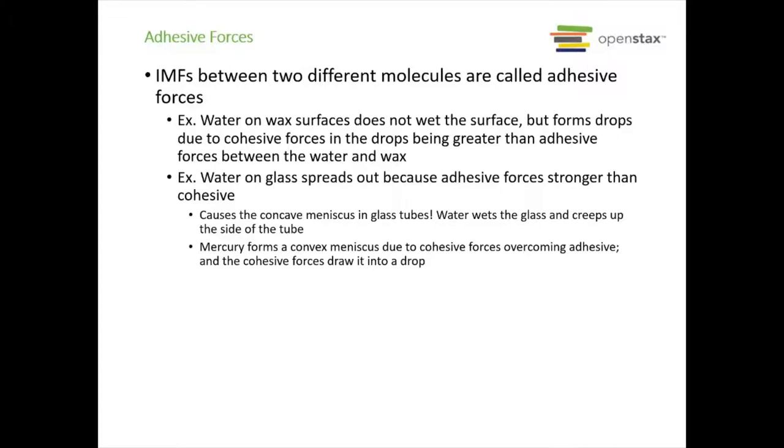Now if you take that water and put it on glass, it spreads out, because the adhesive forces between the water and glass are stronger than water's cohesive forces. This is also what causes the concave meniscus in a glass tube. If you take a test tube and you put water in it, it forms a meniscus. So water is wetting the glass and it's creeping up the side of the tube. That's why you have this concave meniscus.